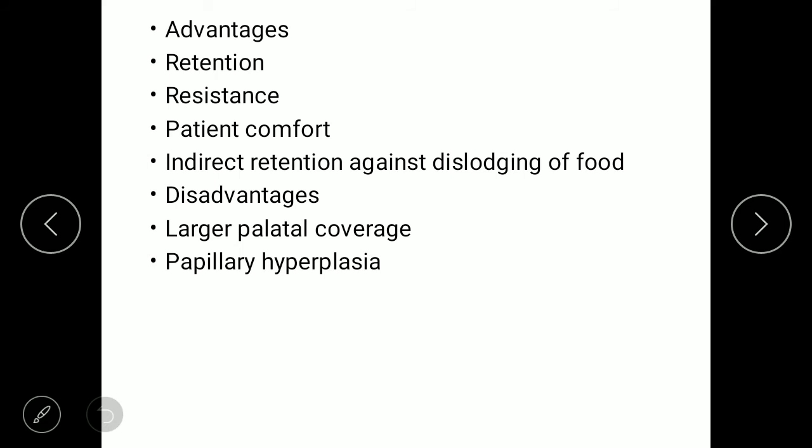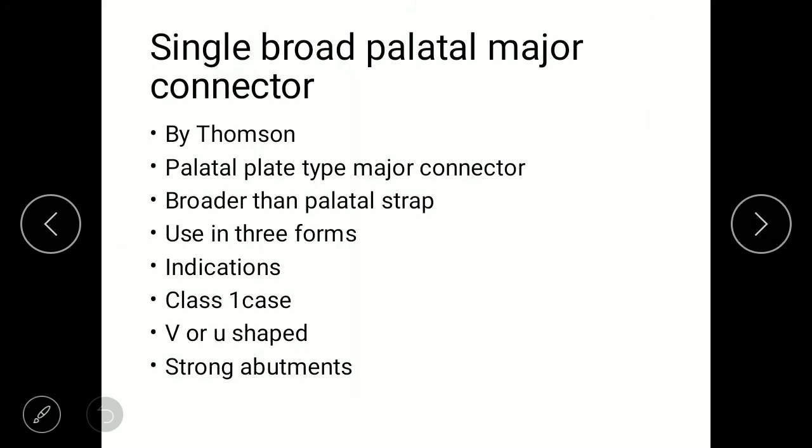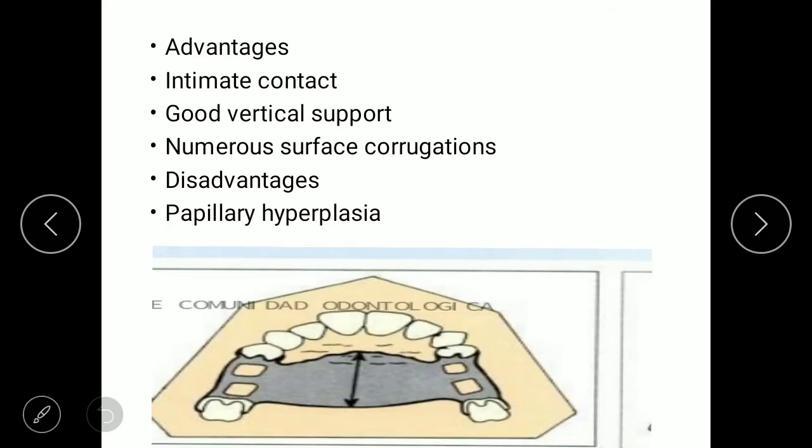Disadvantages of the palatal strap include inflammatory tissue reactions and larger palatal coverage leading to papillary hyperplasia. The next type is the single broad palatal connector, discovered by Thompson, which provides counter palatal coverage and is broader than the palatal strap. Three forms are involved: the first covers the area between two or more edentulous spaces; the second is a partial cast palate; and the third is an anterior palatal connector. Indications include Class I cases, U-shaped palate cases, and strong abutment cases. Advantages include good vertical support, good retention, and numerous surface corrugations.